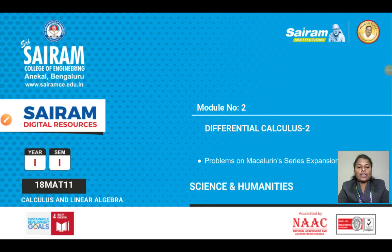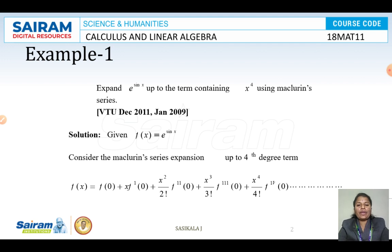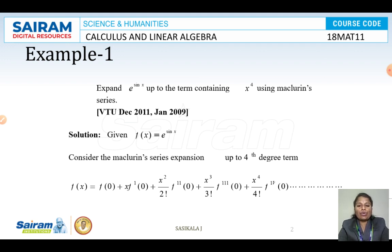In this video, we are going to see the topic under differential calculus 2, which is the problem of Maclaurin series expansion. This is just an extension of the previous video. What we have seen in the previous video is the expansion of Taylor series and also the Maclaurin series — when the particular point A is equal to 0 in the Taylor series expansion, we get a Maclaurin series. We have seen some 3 examples of Maclaurin series.